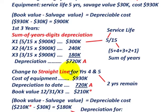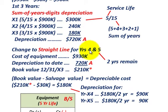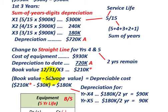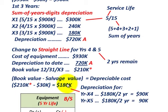Now at the end of the third year, for year four we switch over to straight-line depreciation for the final two years — years four and five. We take the total cost of the equipment, $930,000, and subtract the depreciation to date of $720,000. That gives us a book value or carrying value of $210,000 at the end of year X3, with two years remaining. We then take our book value of $210,000 minus the salvage value of $30,000, giving us $180,000 remaining to be depreciated.